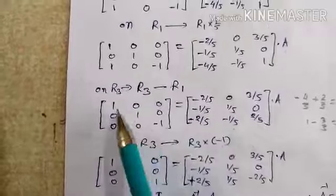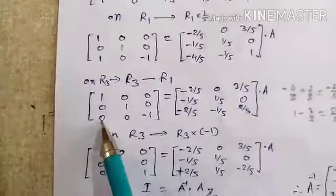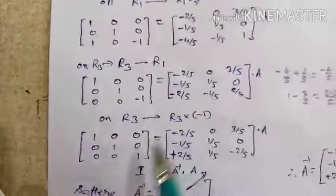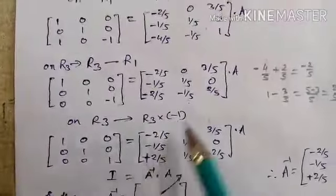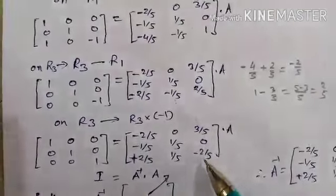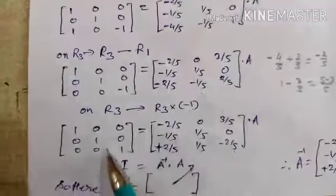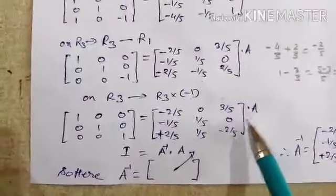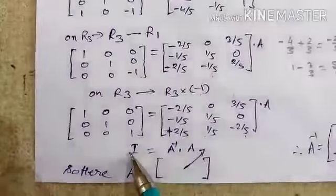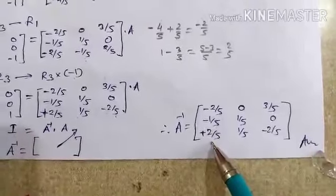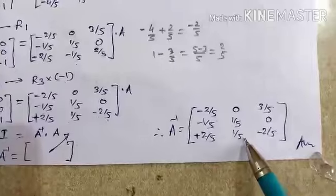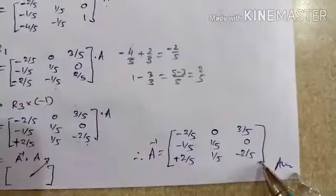Now multiply the third row by minus 1: the leading entry becomes plus 1. The first two rows stay as they are. On the identity side, multiplying through by minus 1: minus minus gives plus, so the third row becomes plus 1 upon 5 and minus 2 upon 5. This gives us the identity matrix I on the left side. Therefore A inverse is the resulting right-hand matrix: row 1 is [minus 2 upon 5, minus 1 upon 5, 2 upon 5], row 2 is [0, 1 upon 5, 1 upon 5], and row 3 is [3 upon 5, 0, minus 2 upon 5].